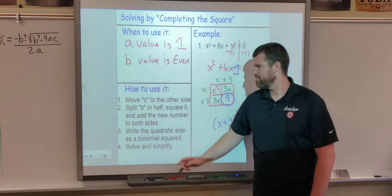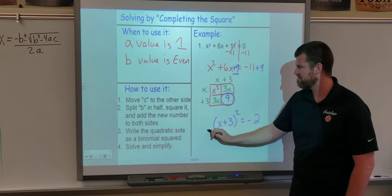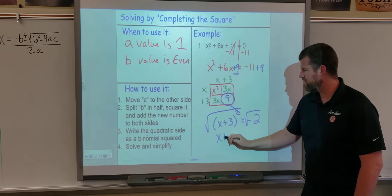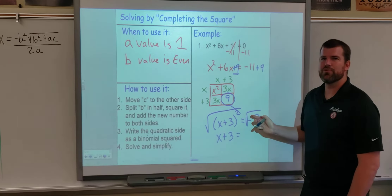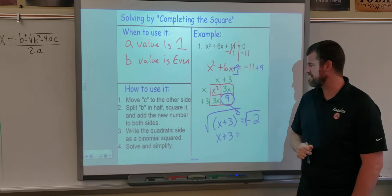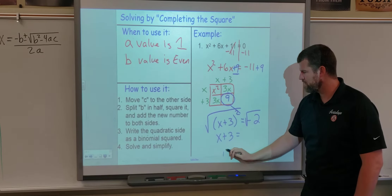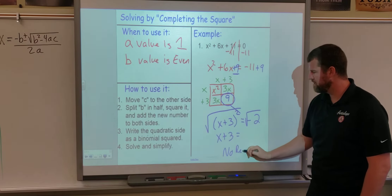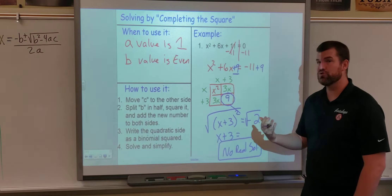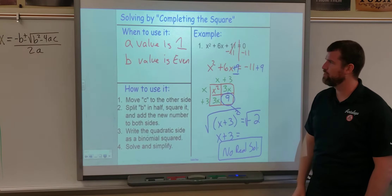Our last step is to solve and simplify. To undo the squared we take the square root of both sides. This becomes x plus 3, but what's the square root of a negative number? We've run into a problem — we can't take the square root of a negative. We stop right there and call this no real solutions. When we complete the square we do usually get solutions, but it is possible we don't.